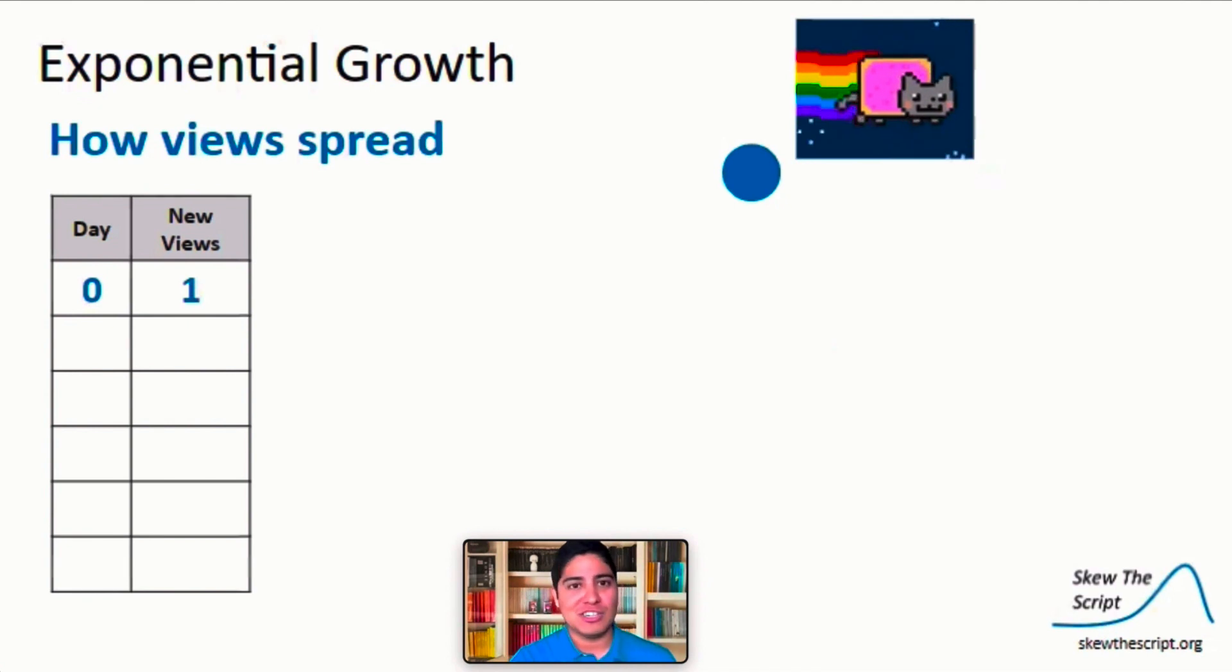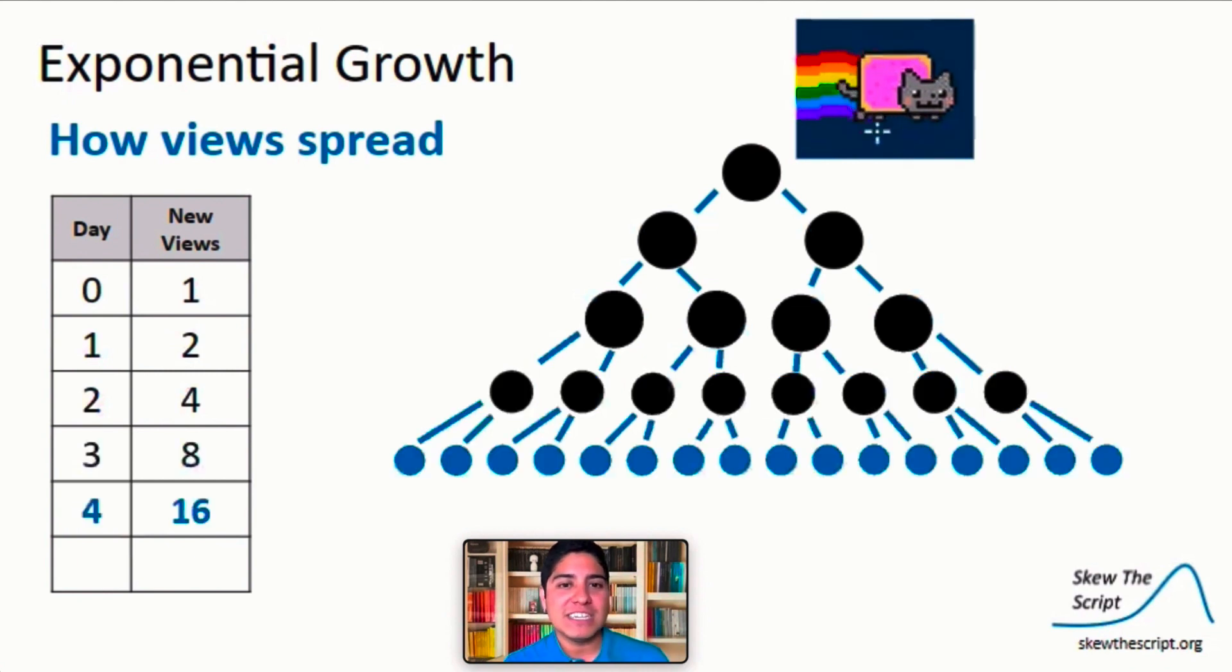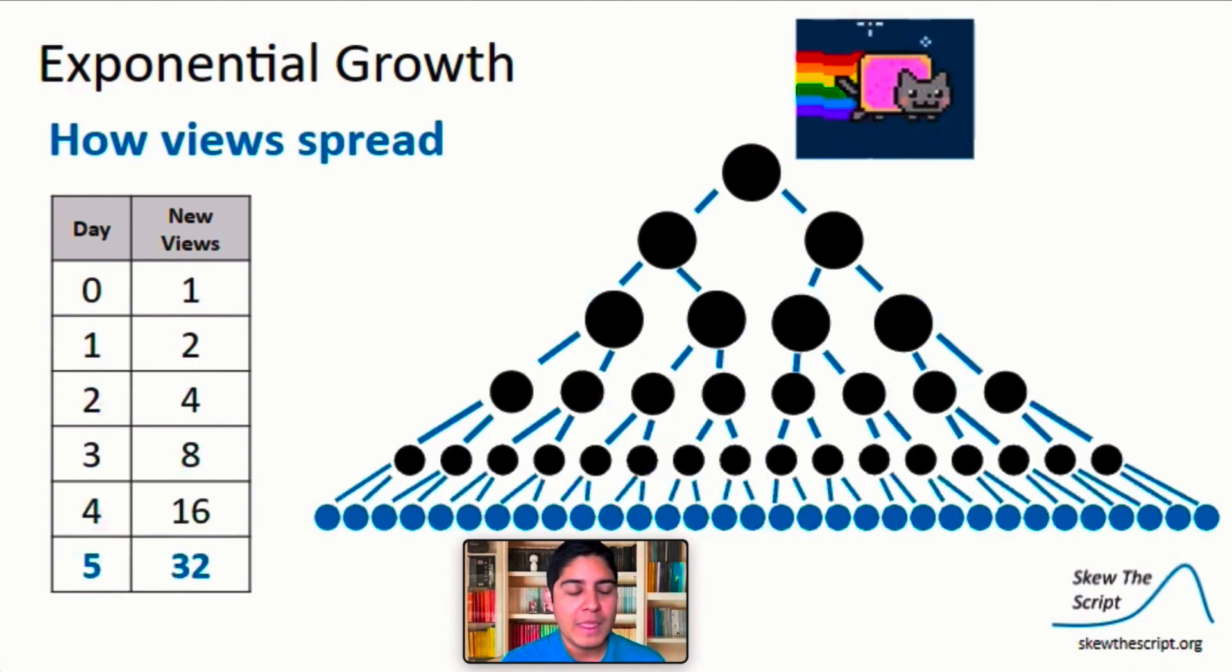On day zero, it's just me. On day one, we have two new views. And as you can see here, the model continues to grow. Now by day five, there are 32 new views and this goes on and on.